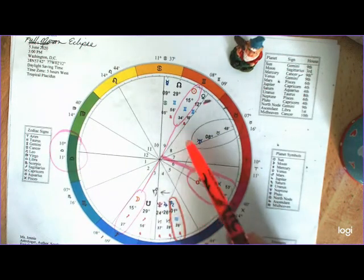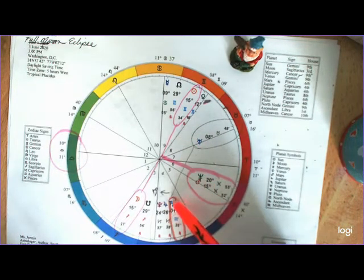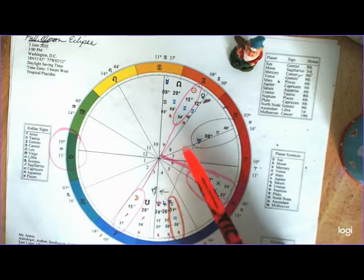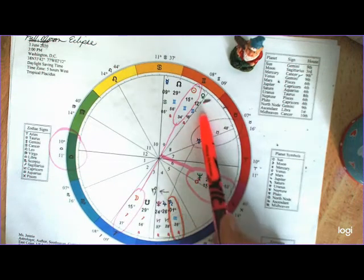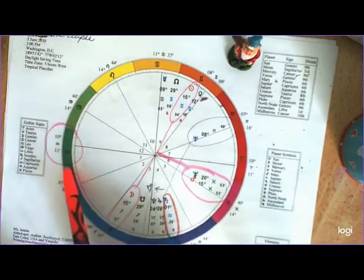Now, Saturn is making a trine to Venus. Luckily, it's a wide trine, so we're not really feeling it. And also, luckily, it is a trine, which is a supportive aspect. So, we're not particularly worried about that. So, however, it is still ruling the chart here in D.C.